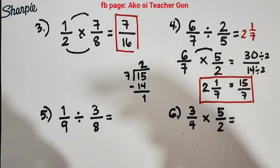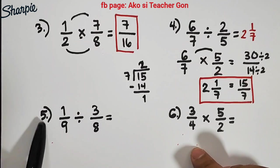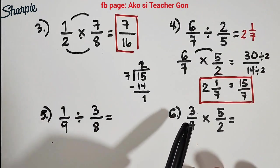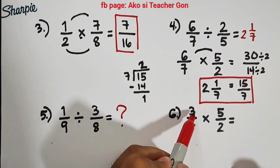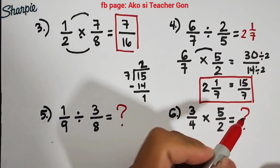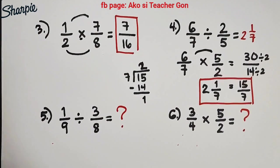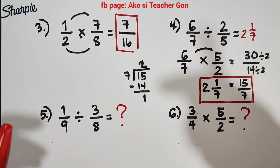Now guys, I hope you learned from our video on how to add, subtract, multiply and divide fractions. Now it's your turn to answer number 5 and number 6. In number 5, we have 1/9 divided by 3/8. In number 6, you are given 3/4 times 5/2. I'll check our comment section for your answers. If you're new to my channel, don't forget to like and subscribe, and hit the bell button to be updated on our latest uploads. Again, it's me Teacher Gon. Maraming maraming salamat, bye!